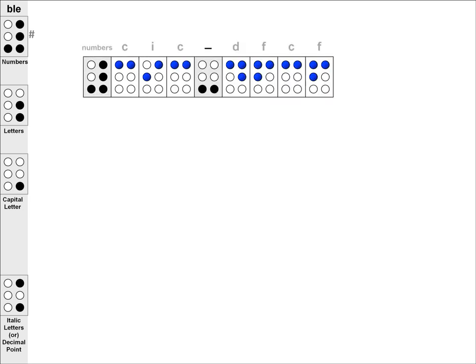First, let's take the number sign and look at an example of a phone number. In this case, we have the number sign, followed by C, I, C, and then a hyphen, which does not terminate the effects of the number sign, and then D, F, C, F.